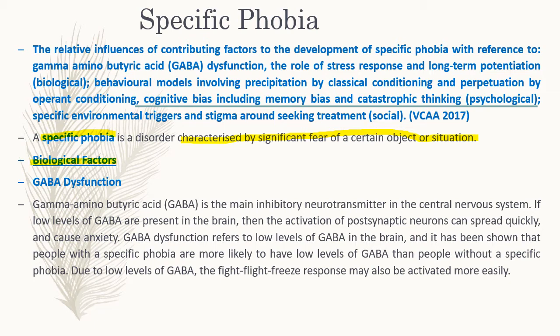The biological factors associated with phobias include GABA dysfunction. Gamma-aminobutyric acid (GABA) is the main inhibitory neurotransmitter. If you have low levels of GABA in the brain, the activation of post-synaptic neurons can spread quickly — in other words, neurons are passing messages way too quickly. This causes anxiety because you're overthinking and jumping to the worst conclusions. GABA dysfunction refers to low levels of GABA, and people with specific phobia are more likely to have low levels of GABA. Due to low levels of GABA, the fight-flight-freeze response may also be activated more easily.